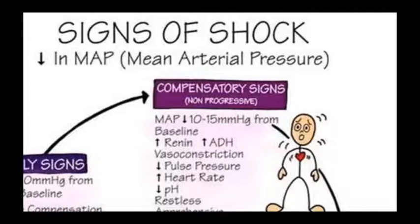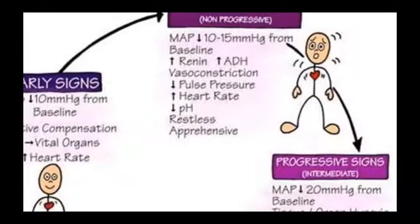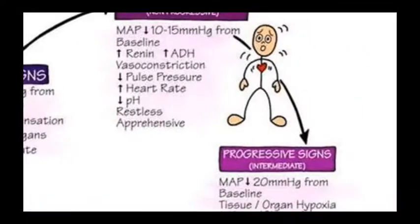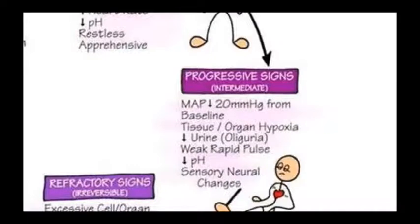Non-progressive phase mein bhi MAP 10 se 15 mmHg baseline se kum ho jaati hai. Renin badhega, ADH badhega, vasoconstriction hoga, pulse rate kum, pulse pressure kum ho jaayegi, jabki heart rate badh jaati hai, blood pH kum ho jaati hai. Bechaini vyakti ko feel hoti hai, apprehensive dikhai deta hai.